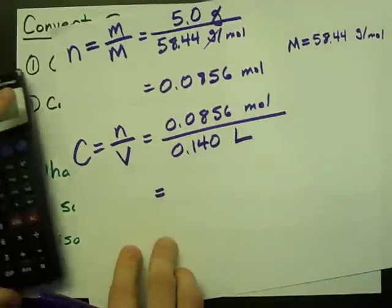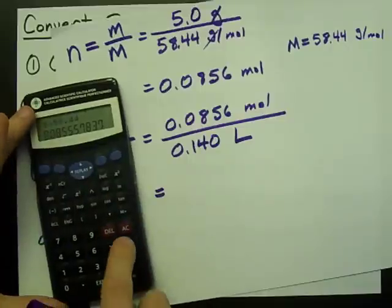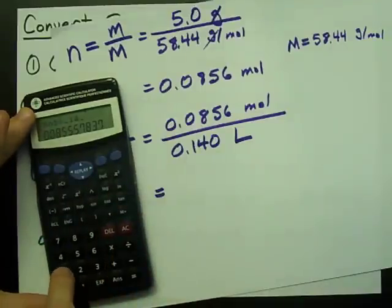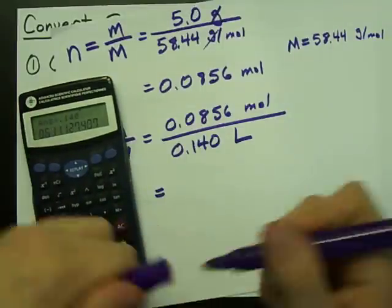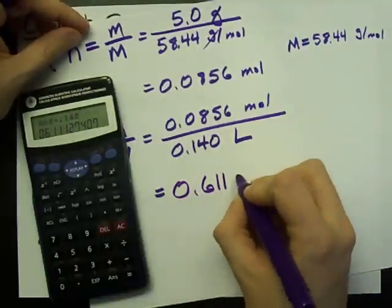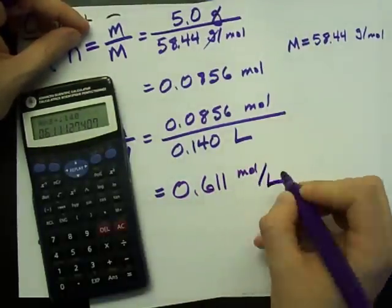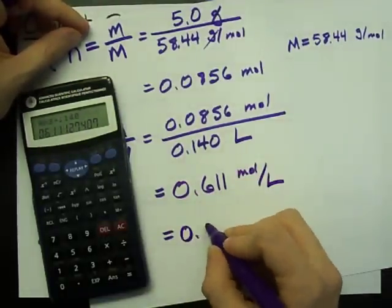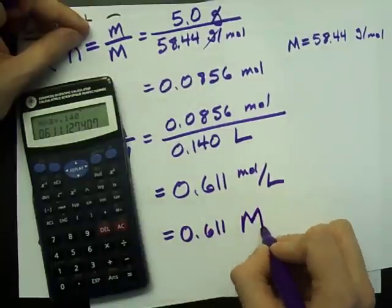So I take my number of moles, divide by 0.140, and I get 0.611 moles per liter, or if you prefer, 0.611 molar.